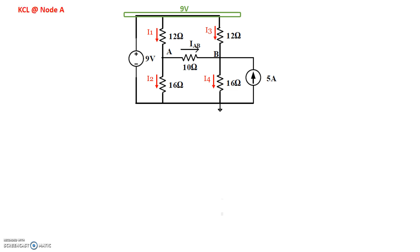Let's start with KCL at node A. The current flowing into A is I1, and the currents flowing out of A are I2 and IAB. Kirchhoff's current law says current in equals current out, so I1 equals I2 plus IAB. I1 flows from the 9-volt node toward A through the 12-ohm resistor, so I1 equals (9 minus VA) divided by 12. I2 equals VA minus 0 divided by 16. And IAB equals VA minus VB divided by 10.